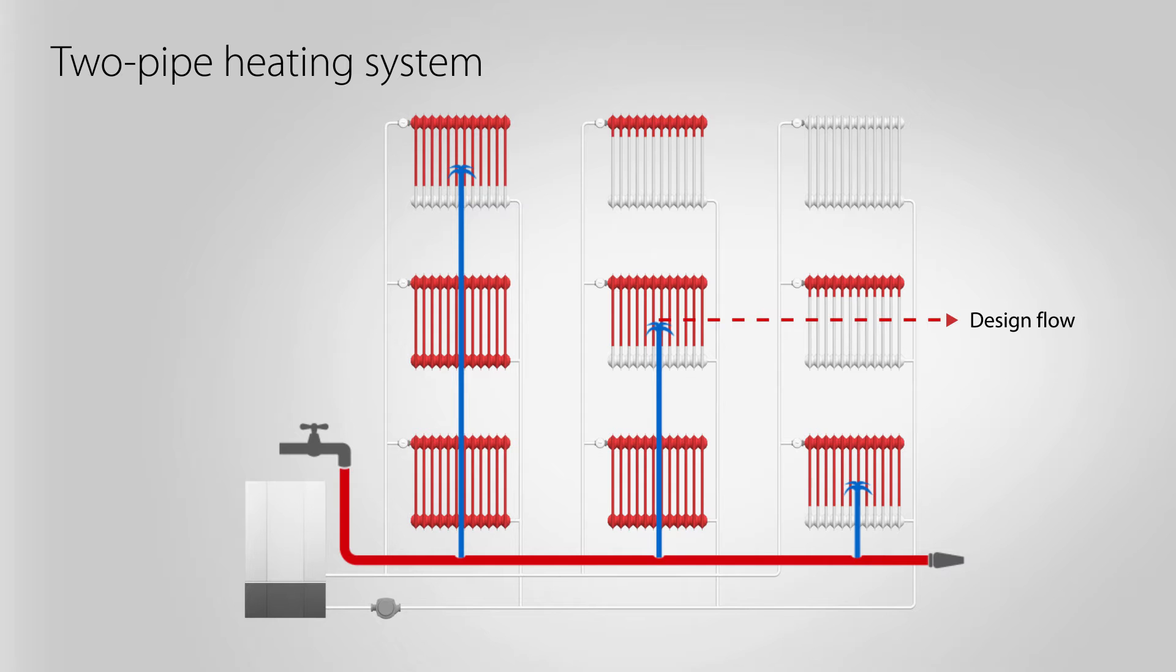In such systems, radiators close to the pump will have pressures that are too high and in turn have too high flows through the radiators. Radiators further away from the pump will experience the opposite, resulting in too low flows through these radiators.